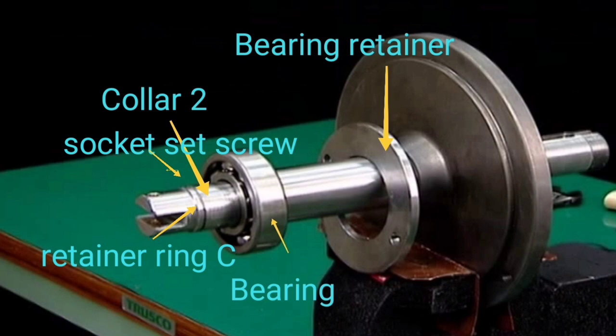Insert the bearing retainer, mount the bearing, Collar 2, tighten the socket set screw, and set the retainer ring C.